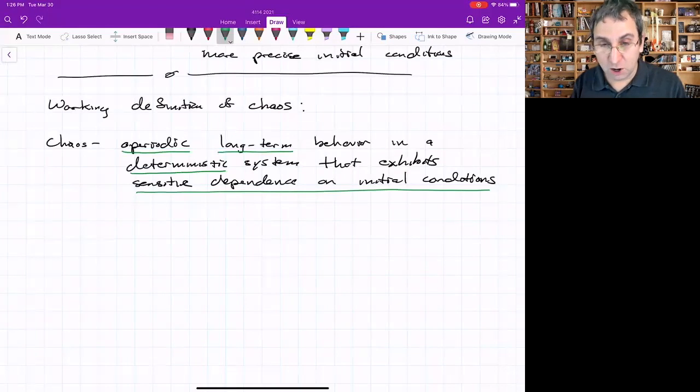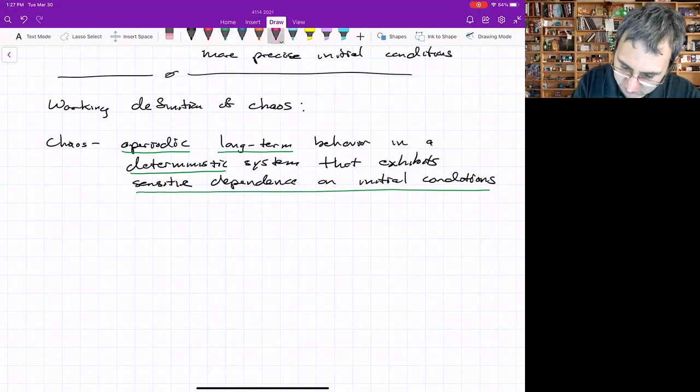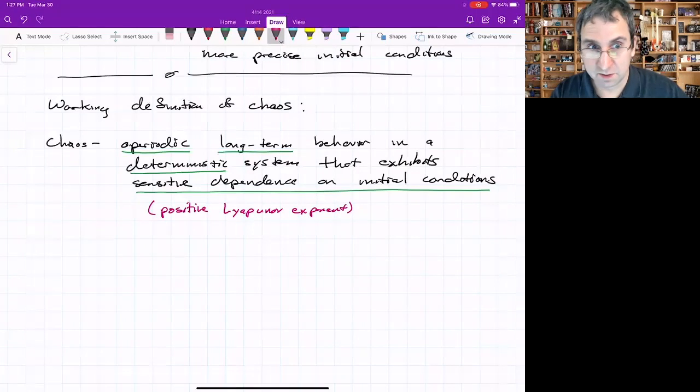But by long-term, we mean it never seems to settle down. This is a working definition of chaos, and some people might have different nuance to it. Sensitive dependence on initial conditions would be if you have a positive Lyapunov exponent. That's necessary, but it's not sufficient.